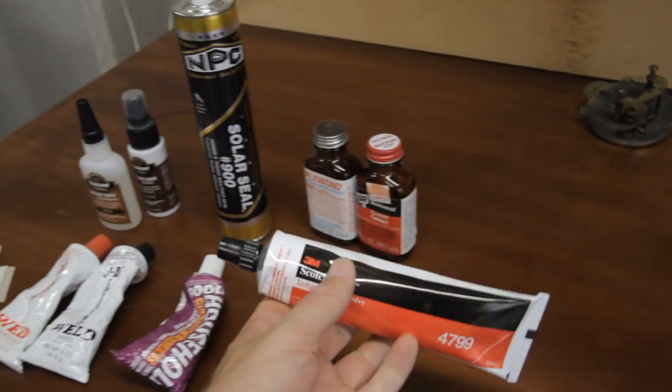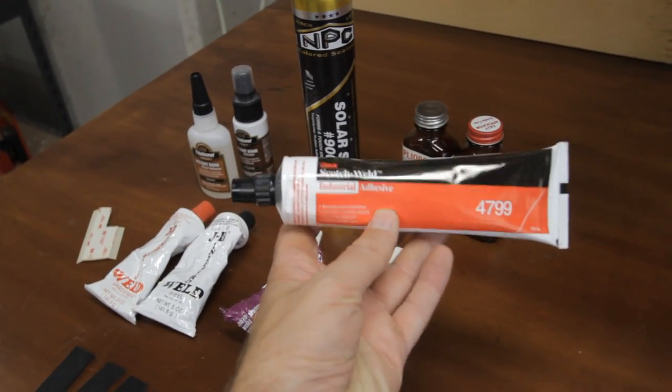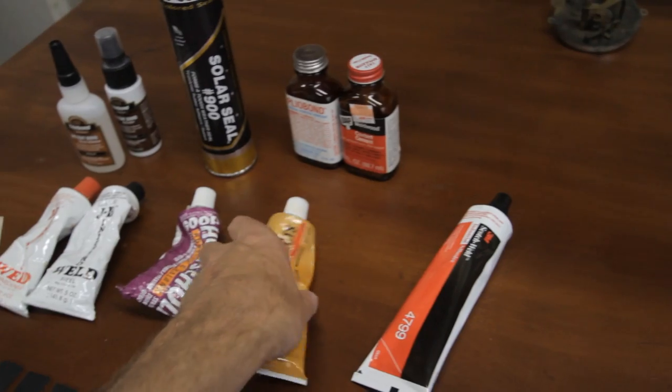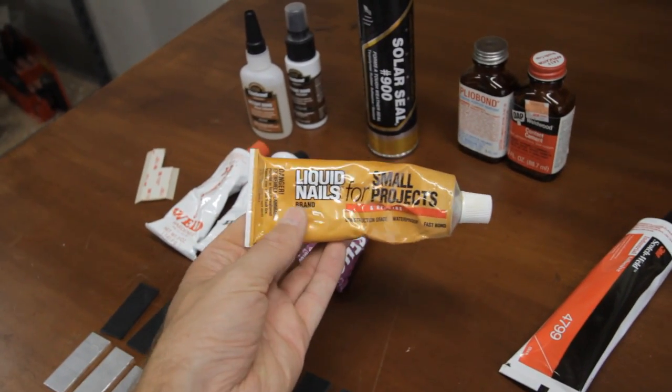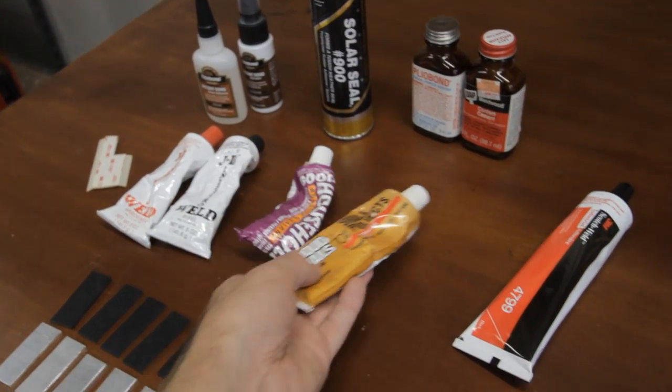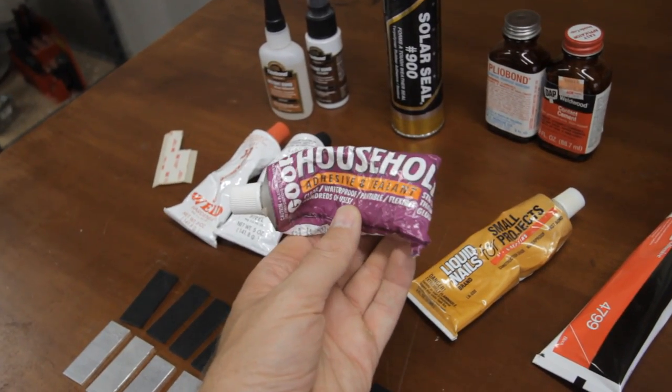A bit of research on Amazon suggested 3M Scotch Weld. Liquid Nails is always popular in construction. Goop has good flexibility.